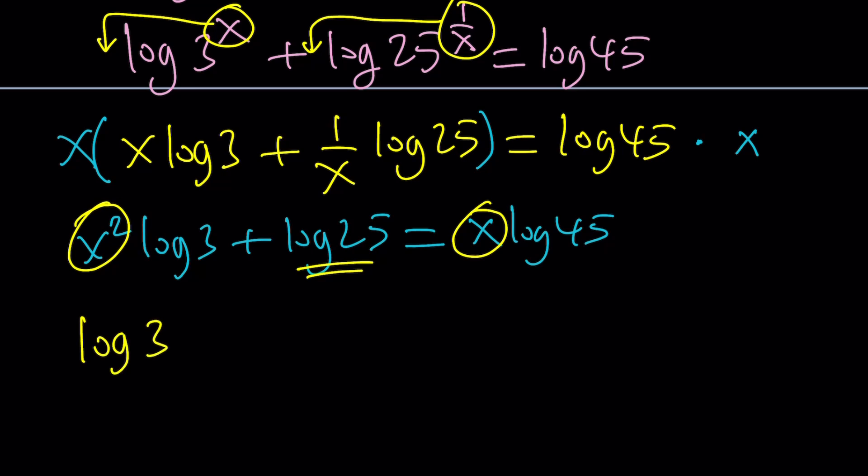Let's go ahead and put this together. We're going to have log 3 times x squared, and then minus log 45 times x, and then finally plus log 25 as our constant, and that's going to equal 0. Now notice that if I put the x squared here and I put the x here, hopefully, that's going to be a little more clear that this is quadratic in x. Right? Awesome.